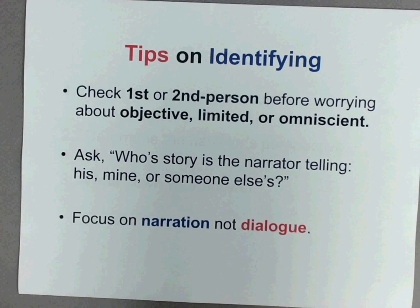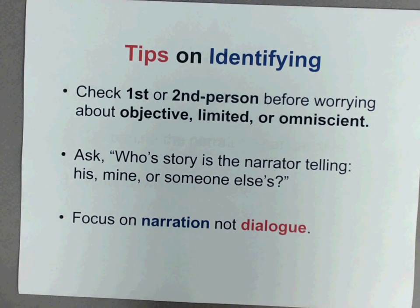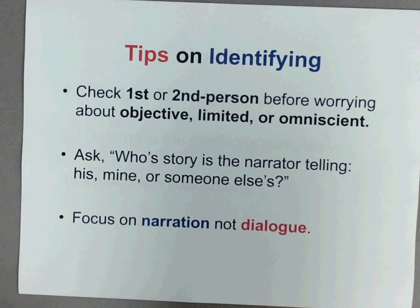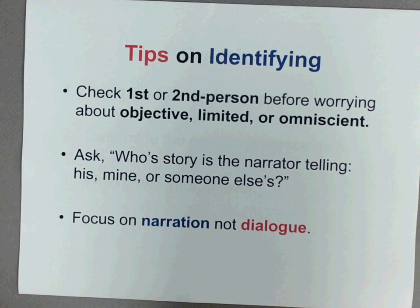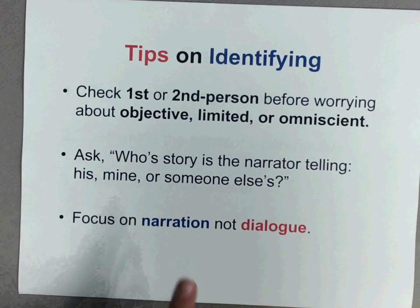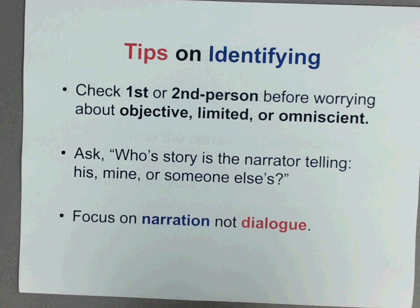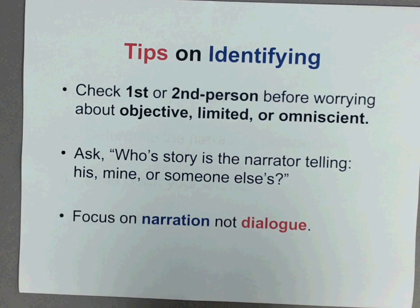Some tips on identifying these things: check first or second person before worrying about third person objective, limited, or omniscient. Then ask whose story the narrator is telling — are they telling his story, my story, or someone else's? Then focus on the narration, not the dialogue. Remember, narration is what the narrator is telling us. Dialogue is what the characters have said and is often found in quotes.